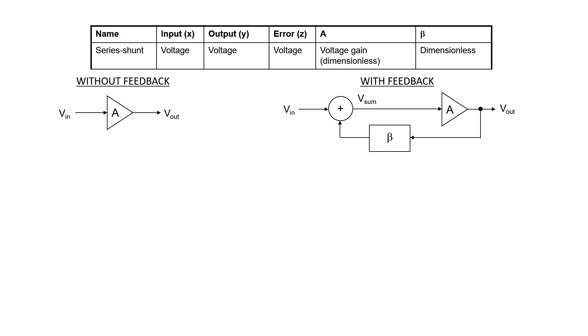Let's look at the series-shunt configuration first. The input should be a voltage, the output a voltage, and the error or the sum would also be a voltage. We'll assume that the feedback is negative. If beta is negative, then the sum voltage would be less than the input voltage. I'm also implicitly assuming that A is positive. If the amplifier is inverting, then beta would have to be positive in order for the loop gain to be negative.